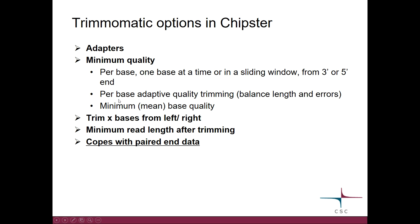You also have the option to filter reads based on mean base quality — you set the minimum value, and if the read doesn't fulfill that, it's removed altogether. You can trim a fixed number of bases from either end, and importantly, you can set the minimum read length after trimming, since we are typically not interested in very short reads. So you can specify that if after trimming the read length is at or below a certain threshold, it should be removed.